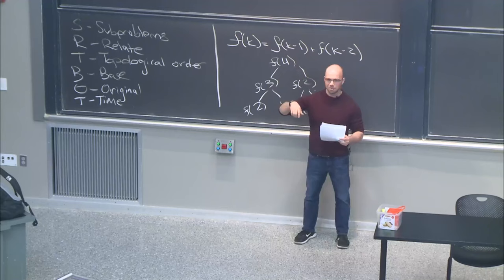Following our SORT-BOT paradigm, what is the topological order? Notice that x(i) only depends on larger i's. The dependence graph is just a line: x(1) depends on x(2), depends on x(3), depends on x(4). That graph has no cycles, so we're good. The base case: since we call future indices, the base case sits at the end of the array.